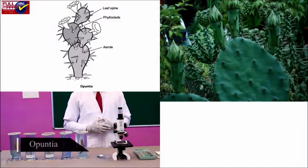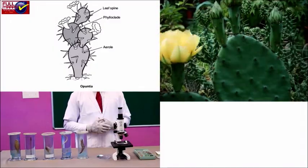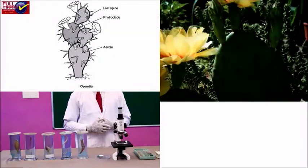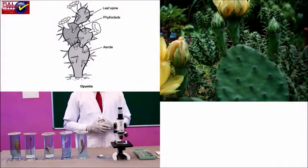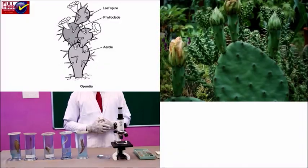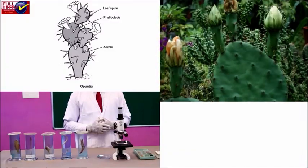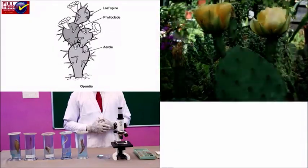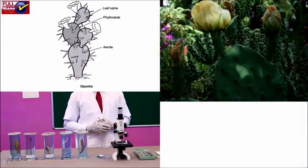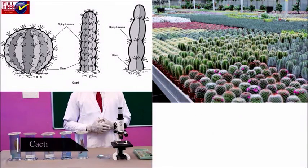Opuntia has green, flattened stems with nodes and internodes. Leaves are reduced to spines to reduce the surface area. The stem is succulent, called a phylloclade, to conserve water.